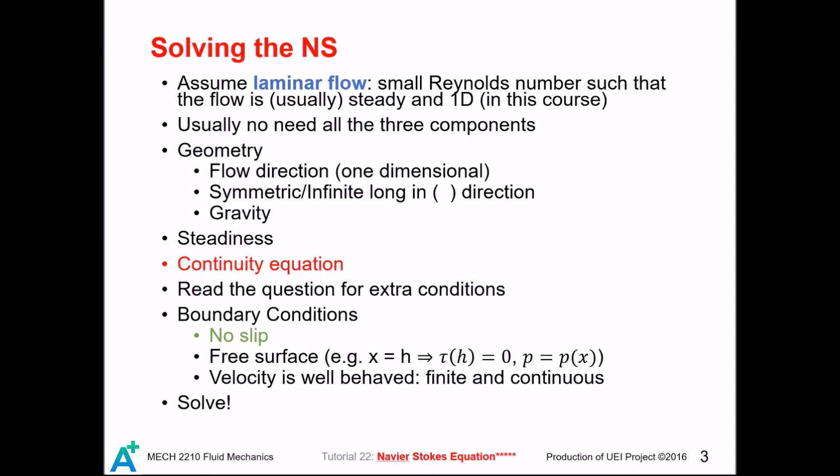First, we shall consider the flow direction. If the fluid just flows in one direction, we can cancel many terms already. Then, we can observe the geometry of the flow. For pipes, the flow is usually axisymmetric — that is, all the quantities are independent of theta.